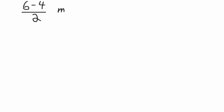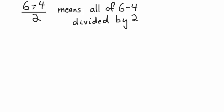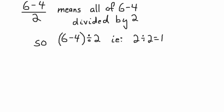What if it gets a bit more complicated, like 6 minus 4 divided by 2? What that means when you write it as a fraction is all of 6 minus 4 divided by 2 — not 6 subtract just the result of 4 divided by 2. It means 6 minus 4, all calculated first, then divided by 2. So 6 minus 4 is 2, divided by 2 is 1. The answer is 1.